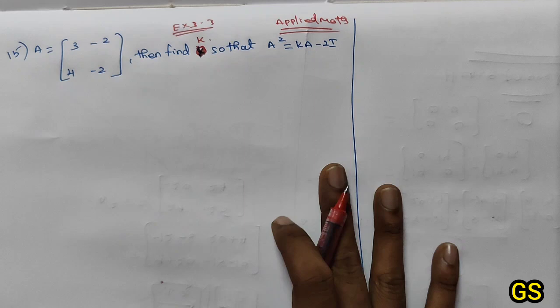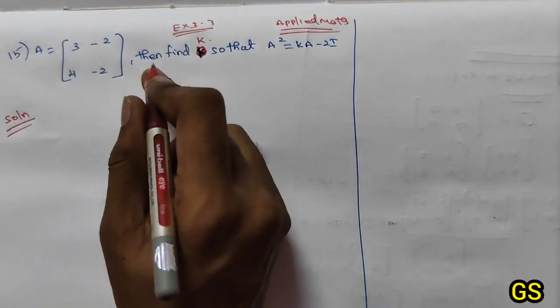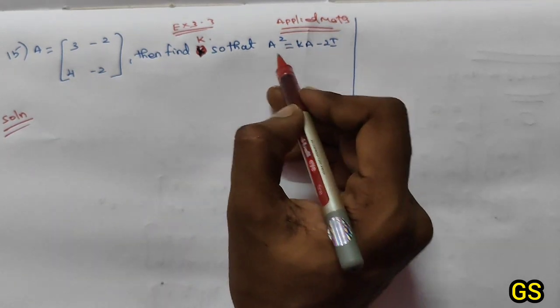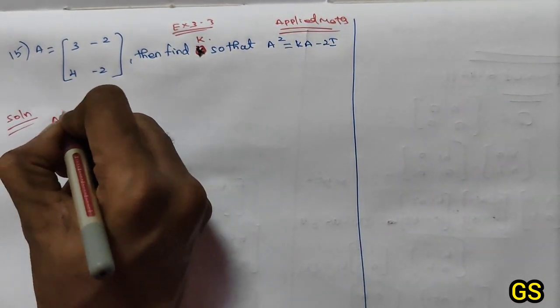Question 15 is simple. Given a matrix A, find k so that A squared is equal to kA minus 2I. So we need to find k.